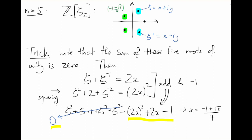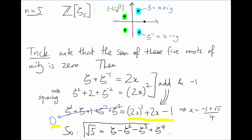If we play around with this for a second, we'll see that we can write root 5 as zeta minus zeta squared minus zeta cubed plus zeta to the 4. This is looking promising, so let's try Z adjoin zeta₇.